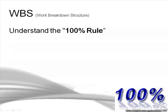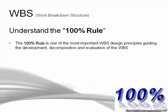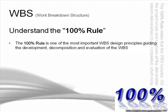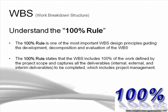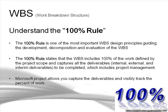Understand the 100% rule. The 100% rule is one of the most important work breakdown structure design principles, guiding development, decomposition, and evaluation of the WBS. The 100% rule states that the work breakdown structure includes 100% of the work defined by the project scope and captures all of the deliverables — internal, external, and interim deliverables — including your project management deliverables. Microsoft Project allows you to capture the deliverables and visibly track the percentage of work.